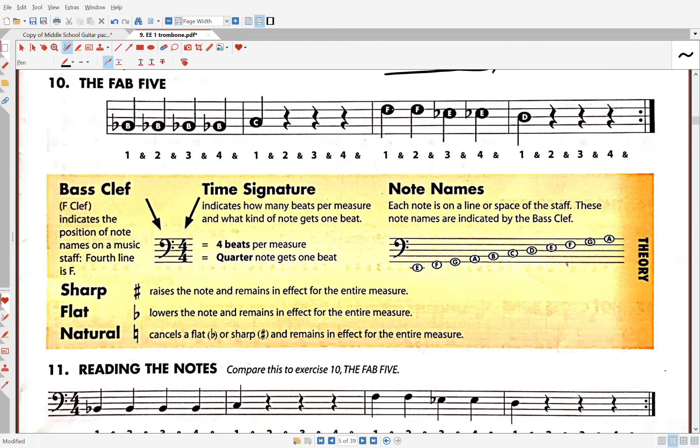This is Note and Rhythm Help for trombone players playing number 10. It's called the Fab Five. We'll circle it there to make sure you know which one I'm talking about.